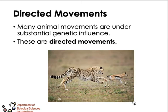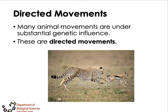In terms of behavior, we have what are called directed movements. Many animals move under substantial genetic influence. For example, when escaping from a predator, the animal moves away from the predator, while the predator moves toward its prey. They already know which is the prey and which is the predator — how to escape and how to catch prey. Moving away and moving toward are examples of directed movements influenced by the genetic material of both predator and prey.